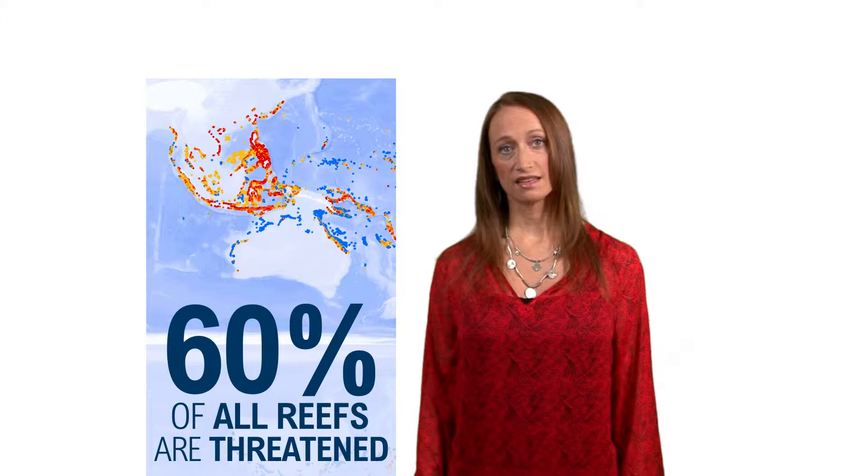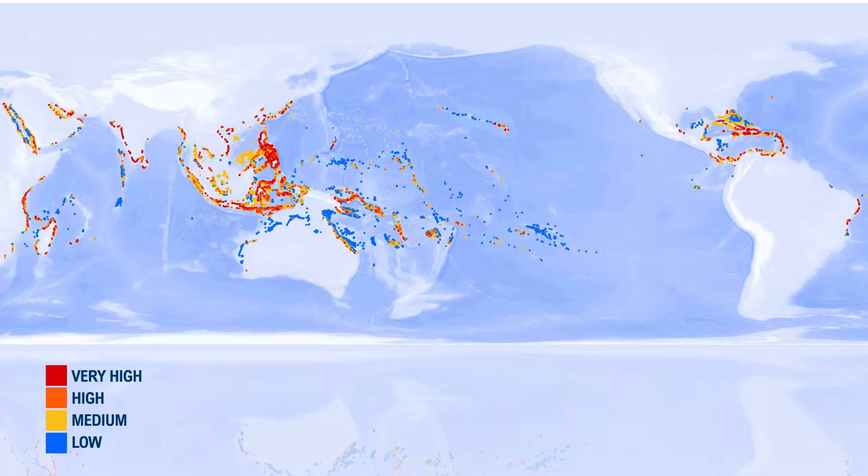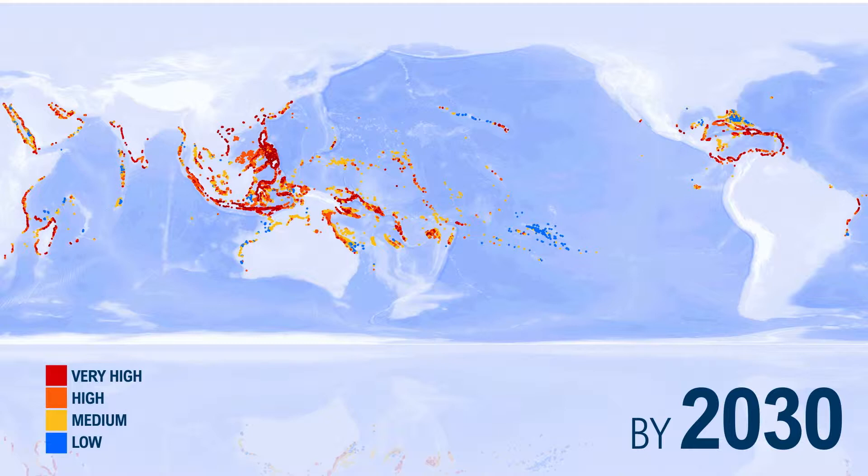Unless we can slow climate change and reduce overfishing and pollution, by 2030, 90% of coral reefs will be threatened. By 2050, virtually all reefs will be threatened.